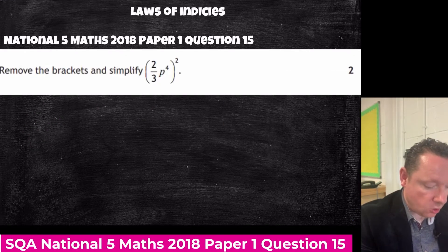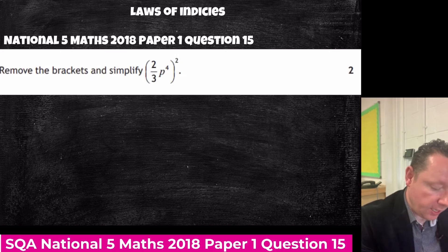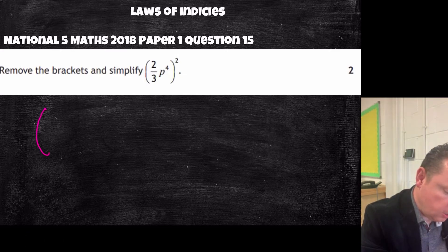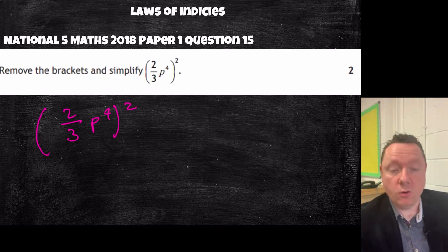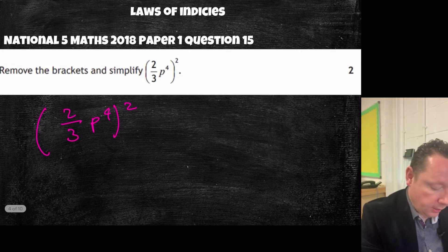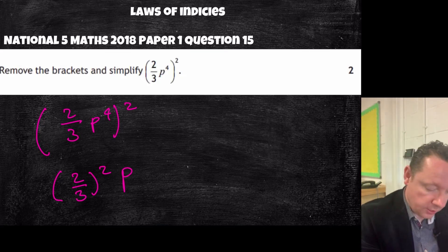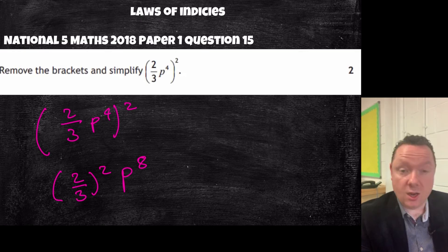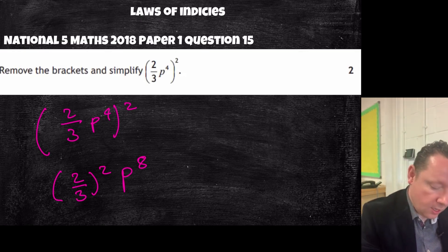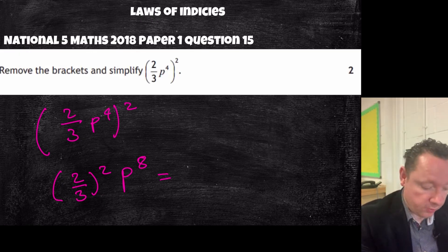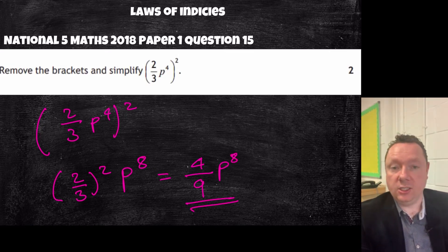SQA National 5 Maths 2018, paper 1, question 15: remove the brackets and simplify. We've got two thirds p to the 4, all squared. This is your power of power rule. We can take the two thirds and square it as well, and the p to the 4 gets squared: 4 times 2 is 8. We need to work out what two thirds squared is — that's two thirds times two thirds, so the top squared is 4 and the bottom squared is 9. Answer: four ninths p to the 8.